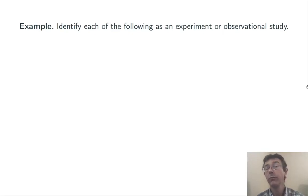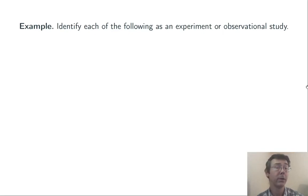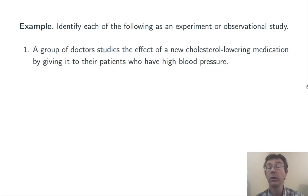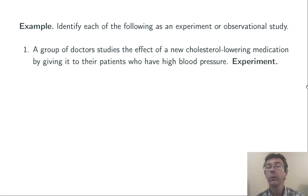Let's do a few examples. In each of these cases, we want to identify whether we're talking about an experiment or an observational study. Number one: a group of doctors studies the effect of a new cholesterol-lowering medication by giving it to their patients that have high blood pressure. This is an experiment — the researchers are applying a treatment and then looking at the results.